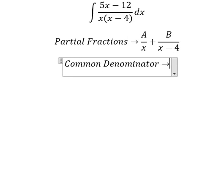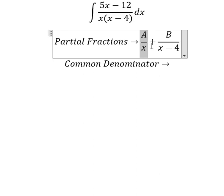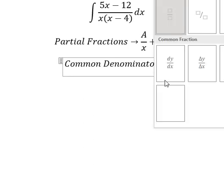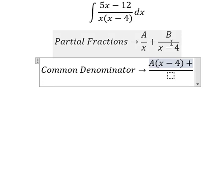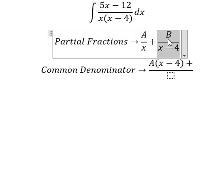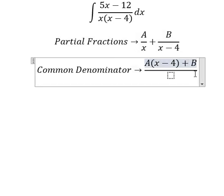So this one is missing x minus 4, so capital A is multiplied by this one. This one is missing x, so capital B is multiplied by x.